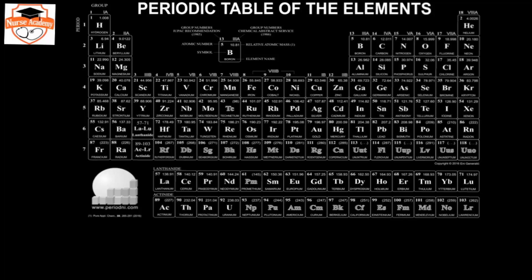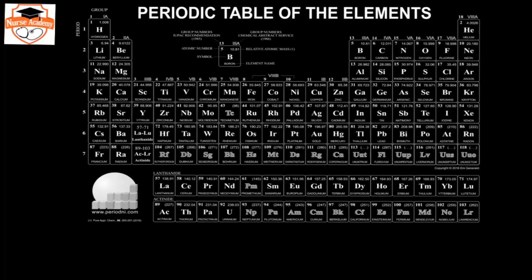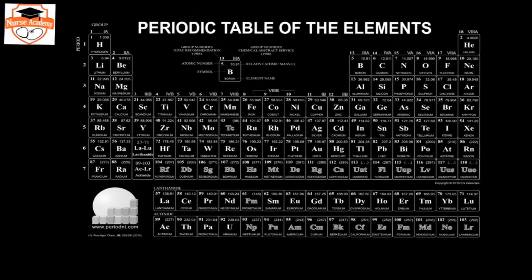Now that we understand what valence electrons are, we can look at how to determine what charges elements make based on their positions on the periodic table. Elements in group 1 have one valence electron; group 2 have two; group 13 have three; group 14 have four; group 15 have five; group 16 have six; group 17 have seven; and group 18 have eight valence electrons.